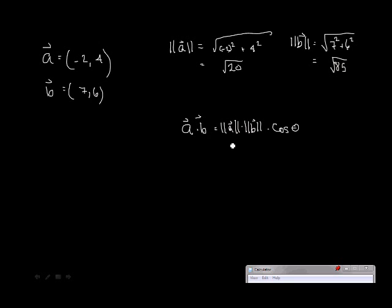And so, now what we have is the square root of 20 times the square root of 85 times cosine of theta is equal to a dot b, our scalar product.